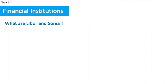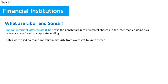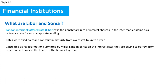What is LIBOR and SONIA? LIBOR — the London Interbank Offered Rate — was the benchmark rate of interest charged in the interbank market, acting as a reference rate for most corporate lending. Rates were fixed daily and could vary in maturity from overnight to up to a year. LIBOR was calculated using information submitted by major London banks on the interest rates they were paying to borrow from other banks, to assess the health of the financial system.